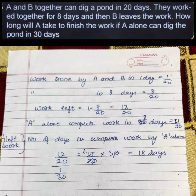Here A and B together can dig a pond in 20 days. They worked together for 8 days and then B leaves the work. How long will A take to finish the work if A alone can dig the pond in 30 days?